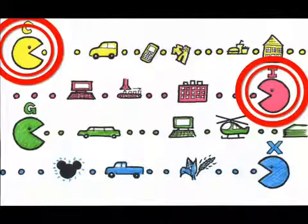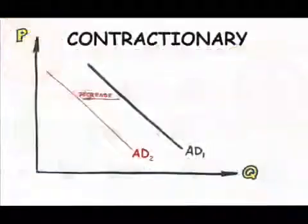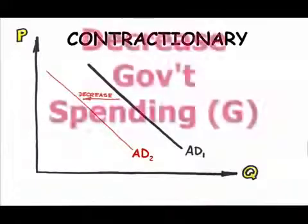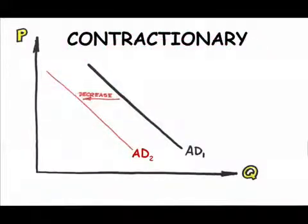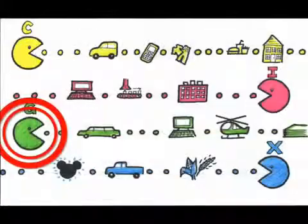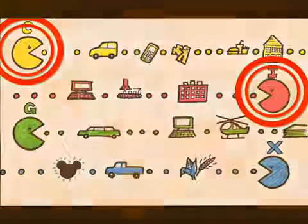Contractionary fiscal policy is typically represented by some type of drag on the aggregate demand, either decreasing government spending or increasing taxes. Again, a change in government spending will have a direct effect on aggregate demand, whereas a change in taxes will indirectly affect aggregate demand by way of households and businesses.